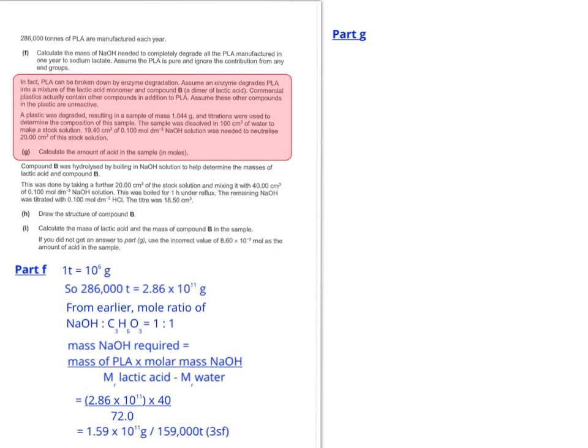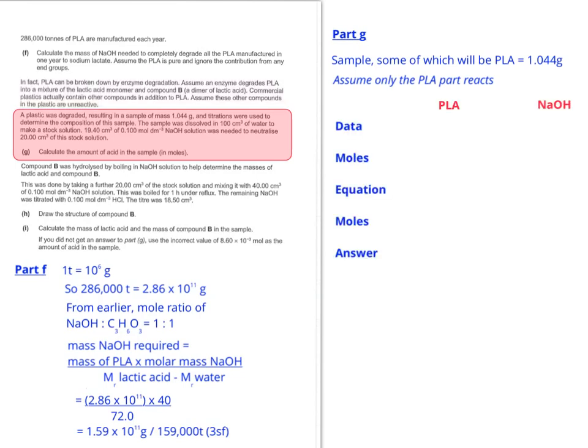It says commercial plastics usually contain other compounds in addition to PLA, and you can assume that these other compounds are unreactive, so they don't interfere with the reaction we're talking about. So our plastic is degraded, resulting in a sample of mass 1.044 grams. So let's just collect the information as we go and process it. So what that means really is that the sample, some of which will be PLA, is 1.044 grams.